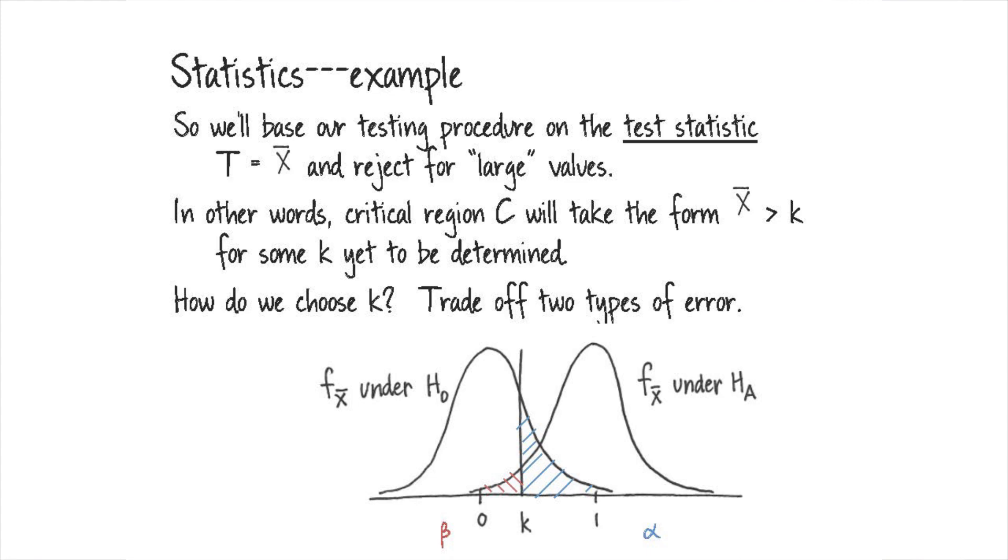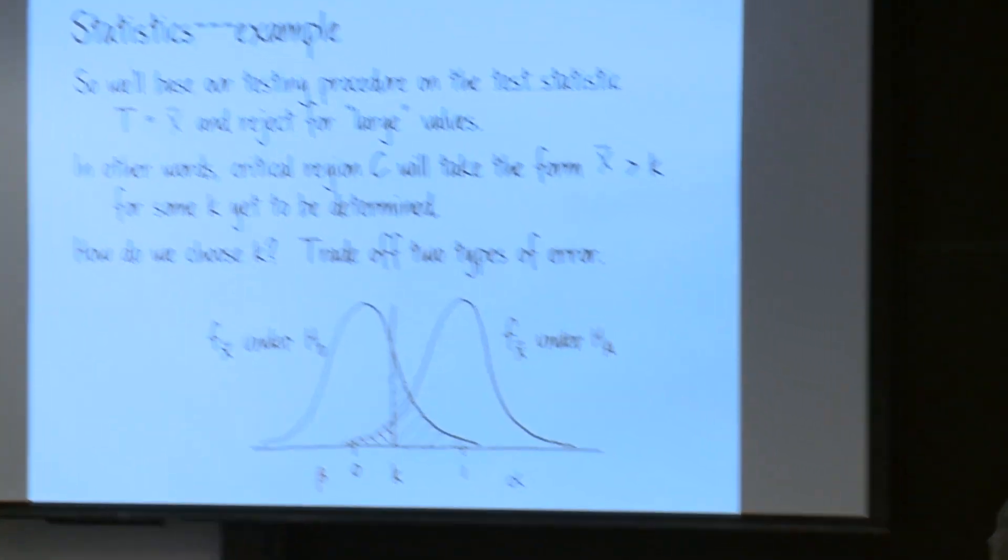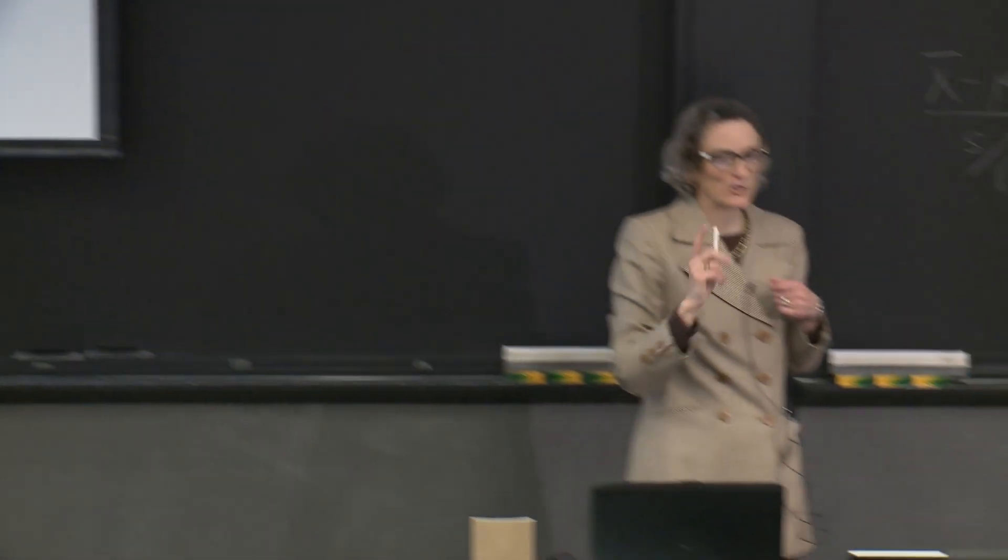So we have some K here. And we accept the null for values of our test statistic less than K. And so this red shaded part here is the probability of accepting a false null. How did we get that? This is how the test statistic is distributed if the null is false. And so this is the probability that our test statistic is less than K under that presumption.